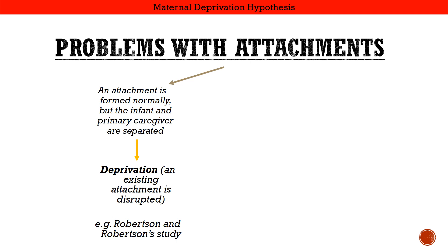There are two different problems that can happen with attachments. The first one we're going to look at today is deprivation. This is when an attachment is formed normally, but the infant and the primary caregiver are then separated — an existing attachment is disrupted. For example, we're going to look at a study by Robertson and Robertson, whereby they went to hospitals and observed different infants when the bond between infants and caregivers had been broken.